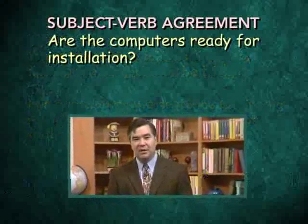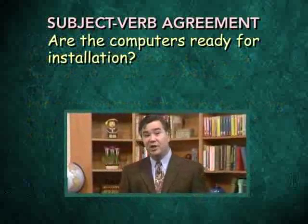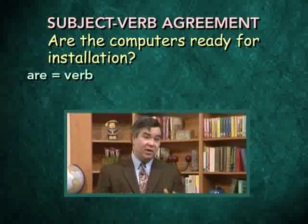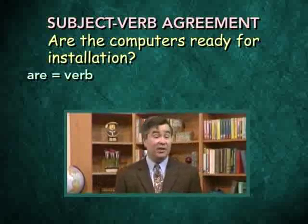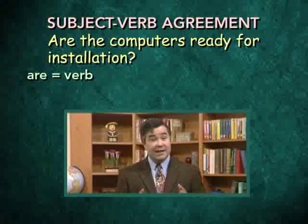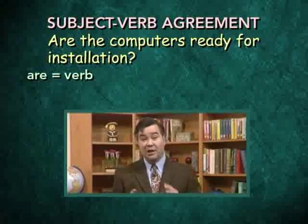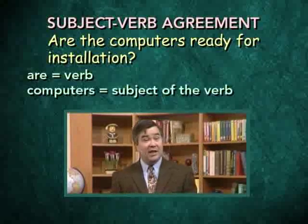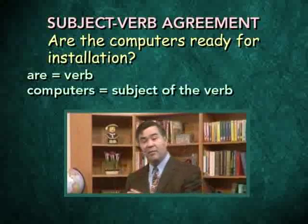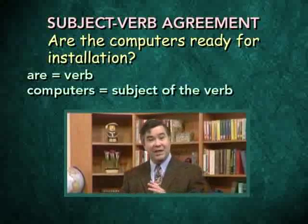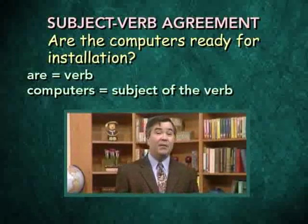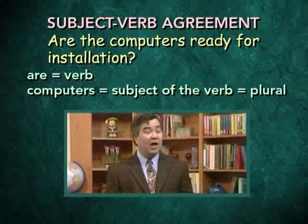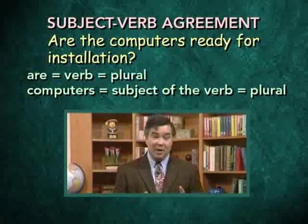Here are a couple of examples. 'Are the computers ready for installation?' Here the verb is the very first word in the sentence — 'are' — as is often the case with questions. What's the subject of the verb 'are'? The subject is the noun 'computers.' If we were to turn this sentence into a statement, it would read: 'The computers are ready for installation,' making it obvious that 'computers' is the subject. Since 'computers' is plural, the verb 'are,' which is also plural, is perfectly correct.